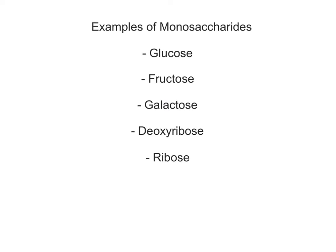Examples of common monosaccharides include glucose, the blood sugar that is broken down to produce ATP; fructose, which is fruit sugar; galactose, milk sugar; deoxyribose, which is the sugar in DNA; and ribose, which is the sugar in RNA.